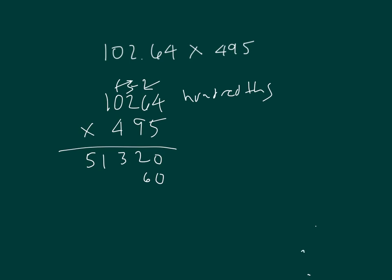9 times 6 is 54, plus 3 is 57, 7, regroup of 5. 9 times 2 is 18, plus 5 is 23. Place 2 zeros. 4 times 4 is 16, 0, regroup of 1. 4 times 6 is 24, plus 1 is 25, 0, regroup of 1. 4 times 0 is 0, plus 1 is 1, and 4 times 1 is 4.